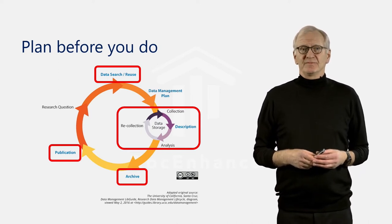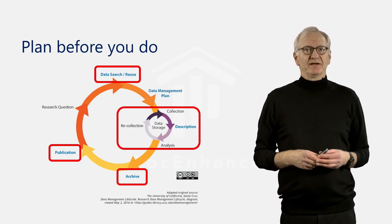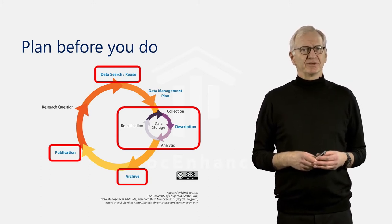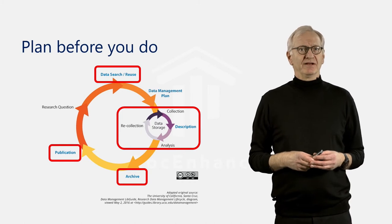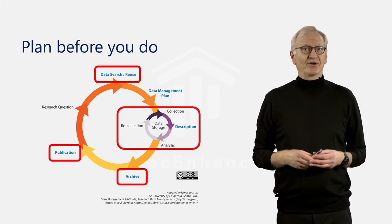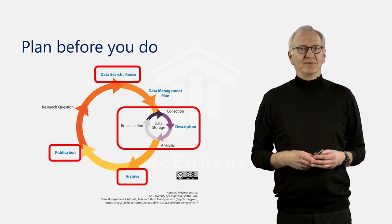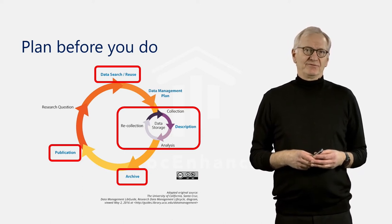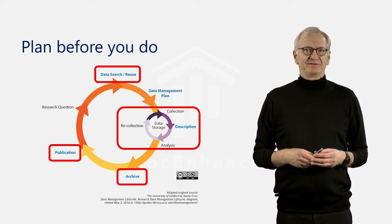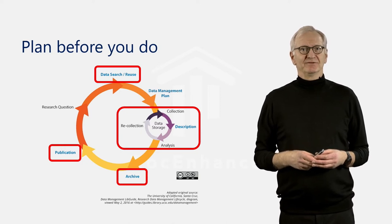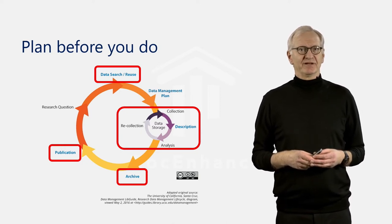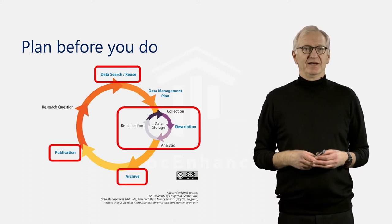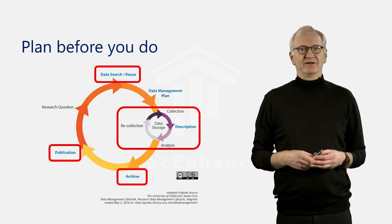The data management plan is a plan for how to manage your research data from the start of a project up to the end where your data are archived and, if possible, made public. It should therefore cover all phases in the research data management lifecycle: search, collection or creation, processing, analysis and storage, as well as archiving and sharing.